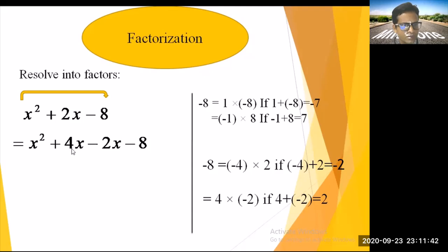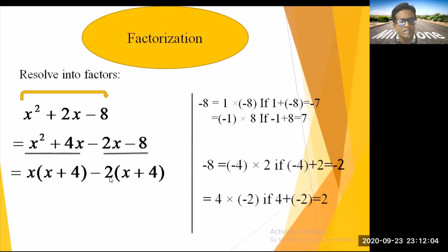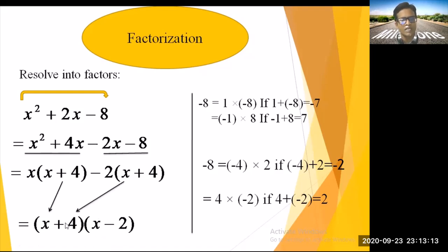So: x² + 4x - 2x - 8. Make two groups: (x² + 4x) and (-2x - 8). Take common x from the first group: x(x + 4). Take common -2 from the second group: -2(x + 4). Since (x + 4) is common, the factors are (x + 4)(x - 2).